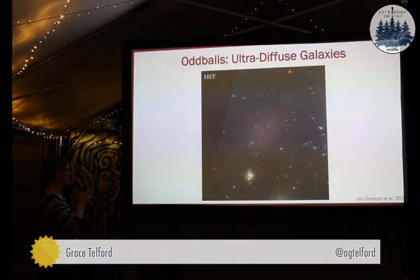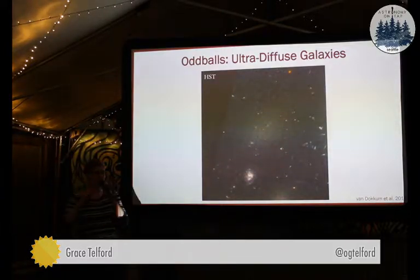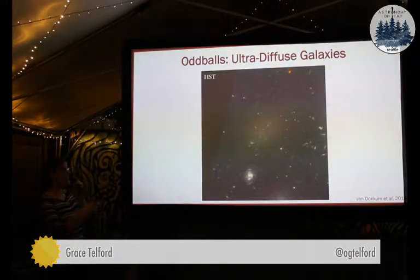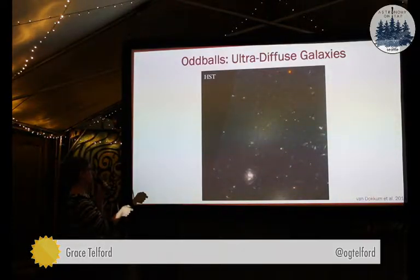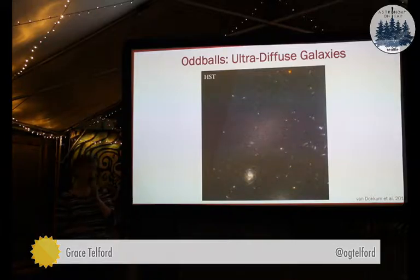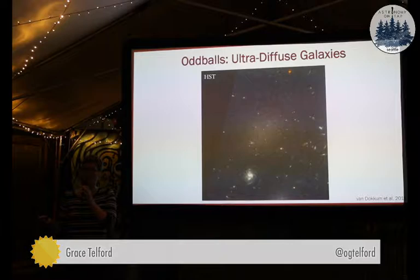This is a fun, oddball class of galaxies: ultra-diffuse galaxies. You can kind of see the galaxy in this image — it's this sort of fuzzy blob in the middle. That is a galaxy. This is in a galaxy cluster, and essentially it is the same physical size — the same diameter — as our Milky Way galaxy, but it has a hundred times fewer stars. So it's much, much less massive, and it's actually basically held together gravitationally by its dark matter. These galaxies are a pretty recent discovery; the paper came out in 2015 and was sort of the discovery paper. This is kind of an open area of research — it's pretty hard to explain how to form these weirdo galaxies that are not very massive at all, but huge.